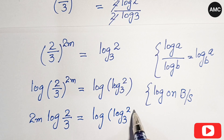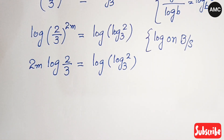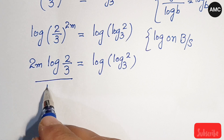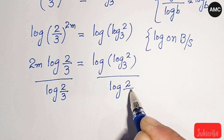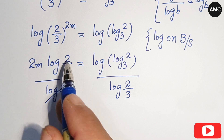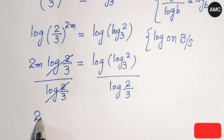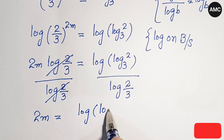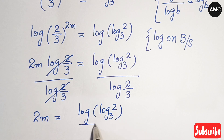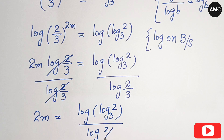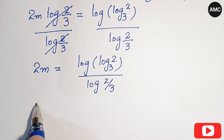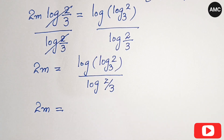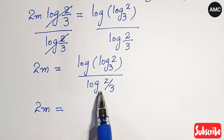Dividing both sides by log 2 over 3, the log 2 over 3 cancels out on the left, and we get 2m is equal to log of log 2 to base 3, all over log 2 over 3. Using the change-of-base law, 2m equals log of (log 2 to base 3) with base 2 over 3.